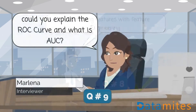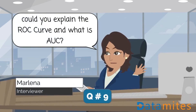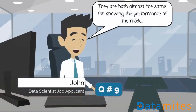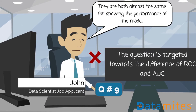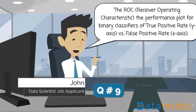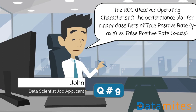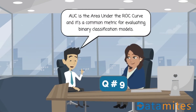Could you explain the ROC curve and what is AUC? They are both almost the same for knowing the performance of the model. The ROC, that is, receiver operating characteristic, is the performance plot for binary classifiers of true positive rate versus false positive rate. AUC is the area under the ROC curve and it's a common metric for evaluating binary classification models.